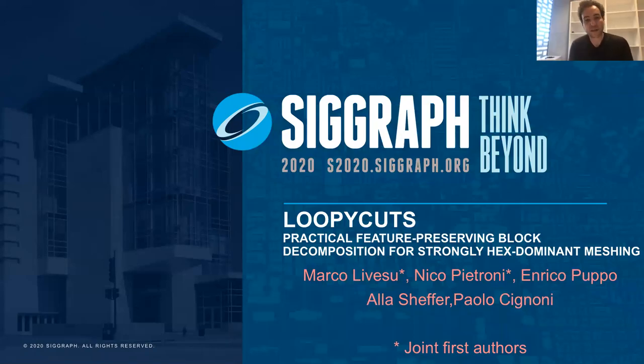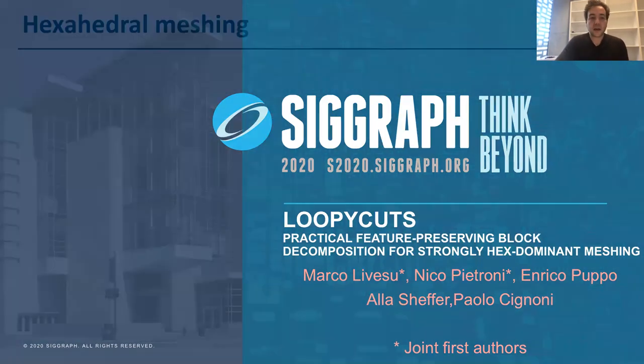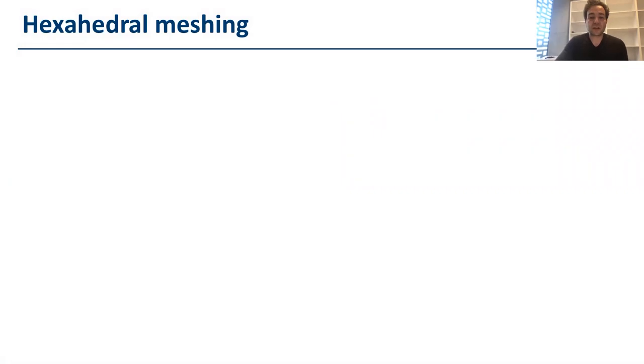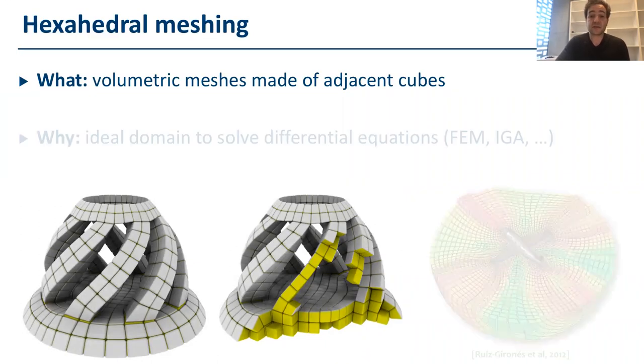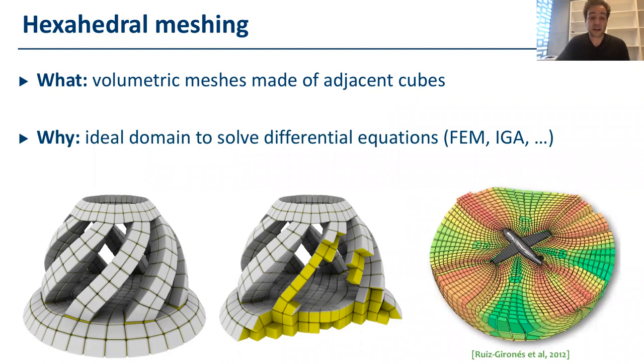Hi, I'm Nico Petroni and I'm presenting LoopyCuts, a new method for hex meshing. Hexahedral meshing is the task to organize a three-dimensional volume into descent cubes sharing faces. Those meshes are called hexahedral meshes and they're used in many industrial contexts like finite element analysis.